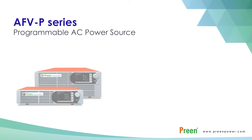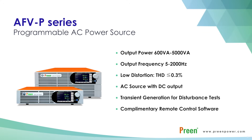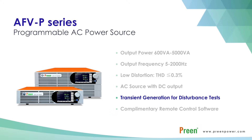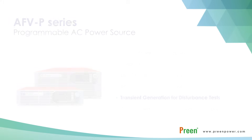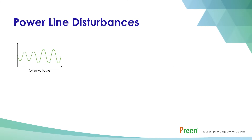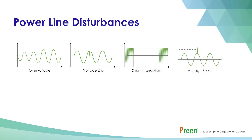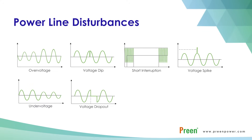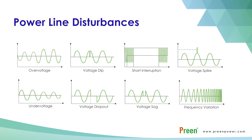Hello everyone. In this video, Preen will showcase how to simulate the standard IEC 61000-4-11 using our popular AFV-P series. The AFV-P series enables easy simulation of diverse power line disturbances with quick setup. Power line disturbances include overvoltage, voltage dip, short interruption, voltage spike, etc. Users can simulate these power quality problems using the AFV-P series and ensure the load can operate properly even under unstable power supply conditions.